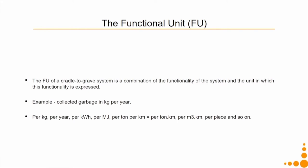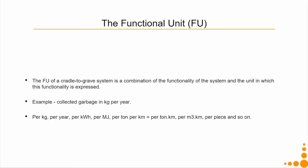For example, if the functionality of the system is to collect garbage, then the functional unit is collected garbage in kg per year. There are many different ways of expressing it: per kg, per year, per kilowatt-hour, per kilometre per ton, per ton·kilometre, or per piece, and so on.